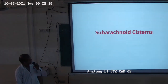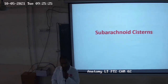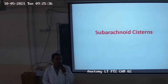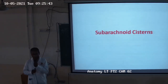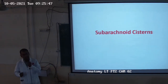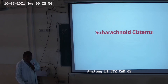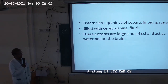Another part is subarachnoid cisterns. A cistern is a space present in the subarachnoid space filled with cerebrospinal fluid. These cisterns are large pools of CSF and act as a waterbed to the brain. The most important cistern is the cerebellomedullary cistern, also known as cisterna magna.